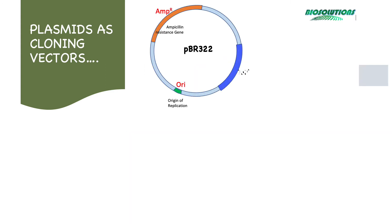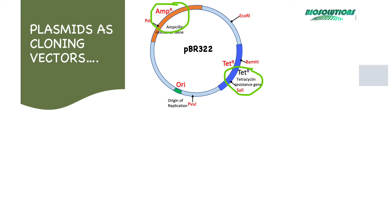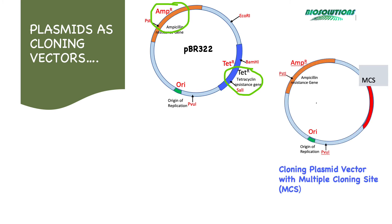This is the pBR322 plasmid — one of the earliest plasmids used as a cloning vector. Its map shows two antibiotic resistance genes for ampicillin and tetracycline, an origin of replication, and a few restriction sites on the plasmid backbone. These restriction sites were used to clone the gene of interest in such a manner that one of the antibiotic resistance genes was destroyed, and then selection was done for the second antibiotic. Then the vectors were genetically engineered to have multiple useful features.